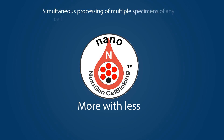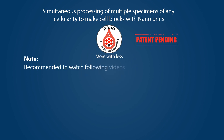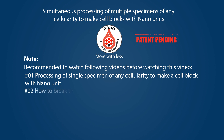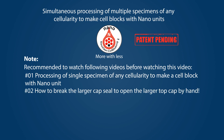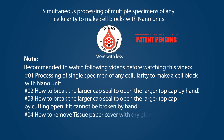Simultaneous Processing of Multiple Specimens of Any Cellularity to Make Cell Blocks with Nano Units. It is recommended to watch the following videos before watching this video: Processing of Single Specimen of Any Cellularity to Make a Cell Block with Nano Unit; How to Break a Larger Cap Seal to Open the Larger Top Cap by Hand; How to Break a Larger Cap Seal to Open the Larger Top Cap by Cutting Open if it cannot be broken by hand; and How to Remove Tissue Paper Cover with Dry Glove Fingers from Envelope Pack.